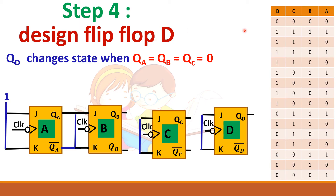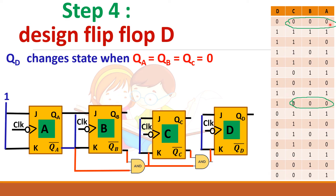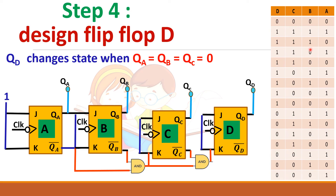To design the fourth flip-flop D, we can see that it changes its state when all three inputs QA, QB, and QC are 0. So we take QA bar, QB bar, and QC bar, AND them together, and give that as the input to flip-flop D. This is just the opposite of the up counter — in an up counter we take QA, QB; in a down counter we take their complements.